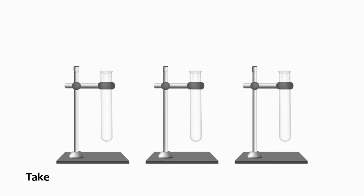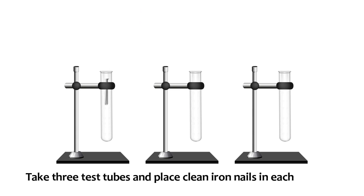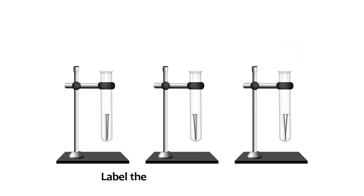Procedure. Take three test tubes and place clean iron nails in each of them. Label these test tubes A, B, and C.